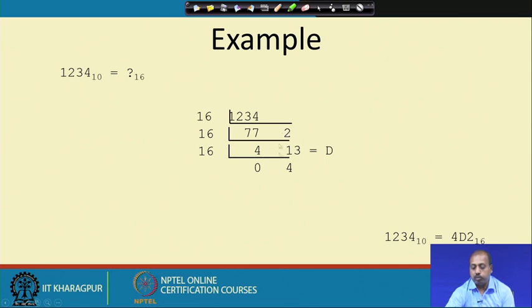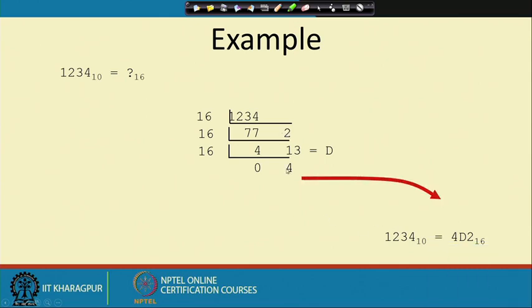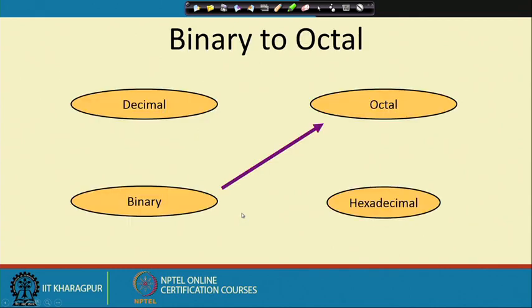So 4D2 is the number corresponding to 1234 in decimal. This way we can convert a decimal number to different hexadecimal numbers.